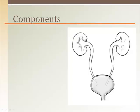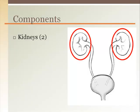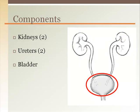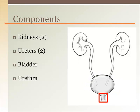The urinary system includes two kidneys which filter the blood and excrete the waste via the urine. There are two ureters, one draining each kidney, that bring the urine to the bladder. The bladder holds the urine until it is voided from the body through the urethra.